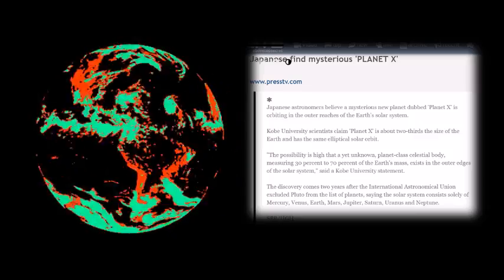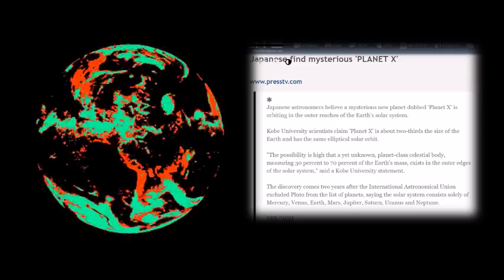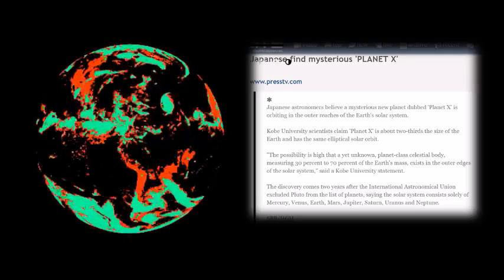Do you know how big the Kuiper belt is? It is from the orbit of Neptune, which is at 30 AU, to about 50 AU from the Sun.